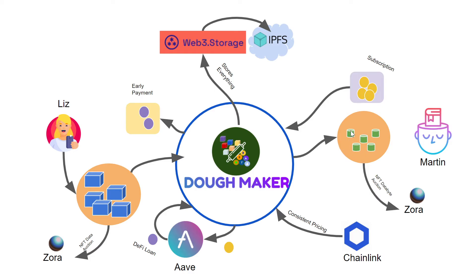On Martin's side, Martin can create an NFT databyte which he can list on Zora using DohMaker. He saves the results from his searches of Liz's data into things which he thinks will sell as NFT databytes, and posts them using DohMaker into Zora-supported auctions. And he can monetize Liz's information that way.